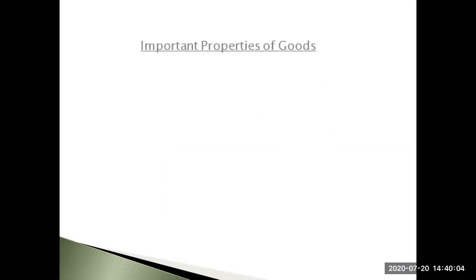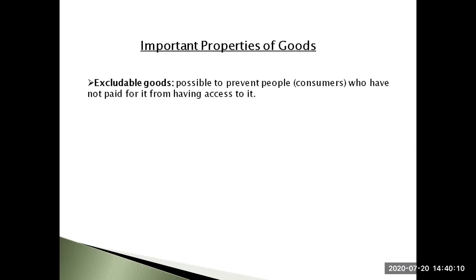There are four categories of goods in economics which are defined based on two attributes. The first attribute is excludability — whether people can be prevented from using the good. The second is whether a good is rival in consumption, meaning whether one person's use of the good reduces another person's ability to use it.